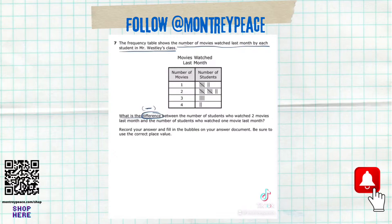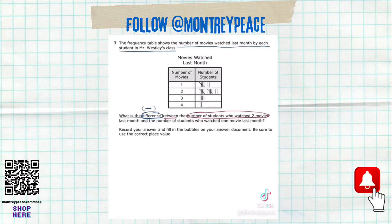That word 'difference' is so important because it tells us we're doing subtraction somewhere in this problem. So we need the number of students who watched two movies and the number of students who watched one movie — those are the two columns we're looking at.